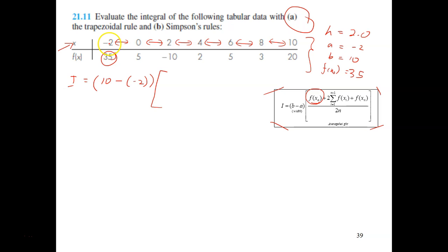So just fill this up. b is 10 minus a is negative 2. And then in the bracket, you have fx0, which is 35, this is x0. So 35 plus 2, and then the summation of everything in the middle. Everything in the middle meaning all the data points in the middle. So which is 5 plus negative 10 plus 2 plus 5 and plus 3.